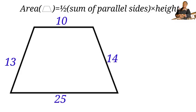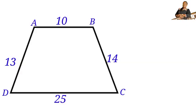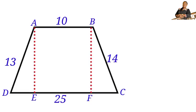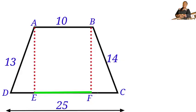To find the height of this trapezium, let us label some points: A, B, C, and D. Now let us draw a perpendicular line from A to DC — call that point E — and also draw a perpendicular line from B to DC — call that point F. The figure ABEF is a rectangle, and opposite sides in a rectangle are equal, so AB equals 10 units and EF also equals 10 units. DC is 25 units.